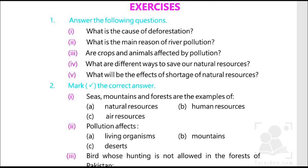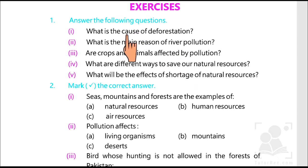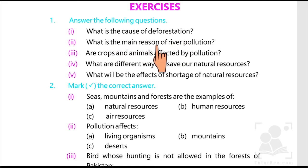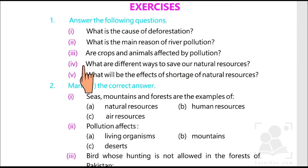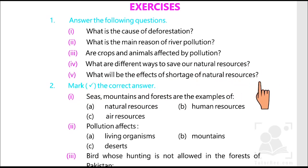The exercise says answer the following questions. The causes of deforestation: deforestation affects reducing the trees and animals. What is the main reason of river pollution? The waste material in the rivers. Are crops and animals affected by pollution? Yes, they are. What are different ways to save our natural resources? There are 12 different ways. What will be the effects of shortage of natural resources? We will face shortage of food and famine.